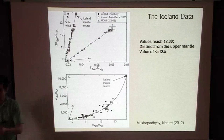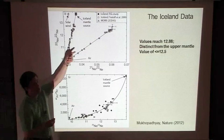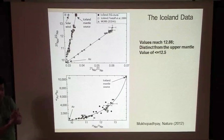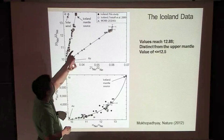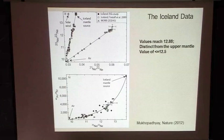The error bars seem to get bigger as you go towards more extreme neon-20/22 samples. In our case we found gases up to 12.9 with very tiny error bars. Often that's because it's hard to find bubbles with no air contamination. It has also been suggested that bubbles with no air contamination have less total gas, because a lot of the gas is actually coming in from air.